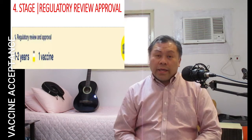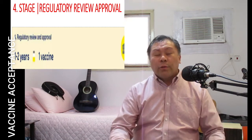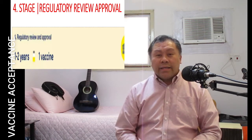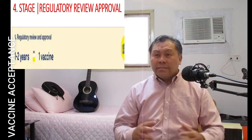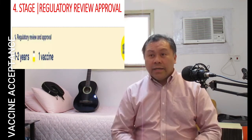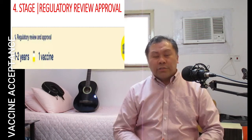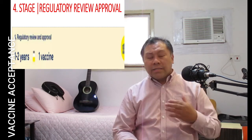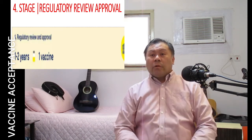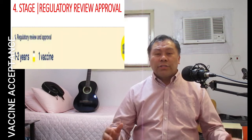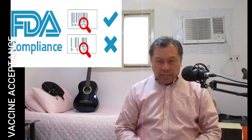After the third stage, we have the fourth stage: Regulatory Review and Approval, which takes one to two years for that one vaccine to receive approval. The approving body in the US is the FDA — the Food and Drug Administration — a federal agency of the Department of Health and Human Services. Every country has a food and drug regulatory agency following international standards. Regulatory approval means all approvals necessary for the manufacture, marketing, importation, and sale of a product in a country or regulatory jurisdiction, including satisfaction of all applicable regulatory and notification requirements.